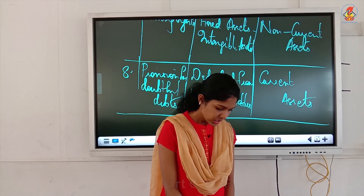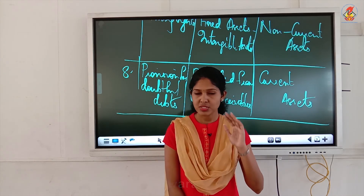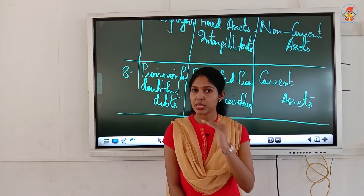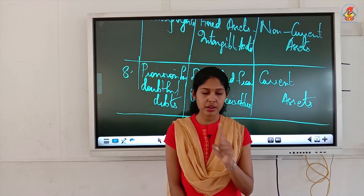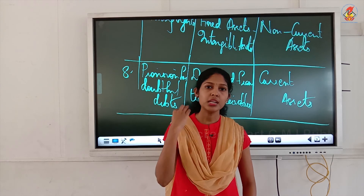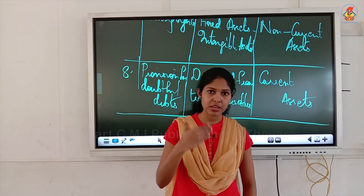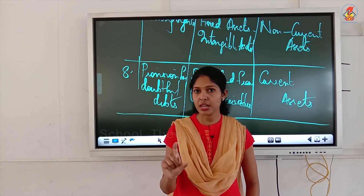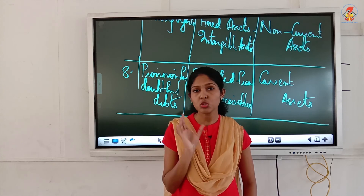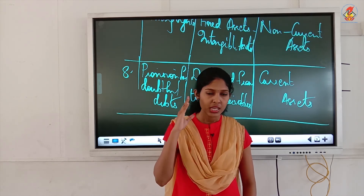Capital work in progress: we have seen this under the fixed assets classification. The subhead is capital work in progress and the major head is non-current assets. Then patents being developed by the company: recall the classification — tangible, intangible, capital work in progress, and intangible assets under development. Since patents are being developed (in progress), the subhead is fixed assets – intangible assets under development. Do not simply write intangible assets, as that implies a finished item. The major head is non-current assets.